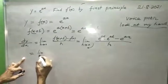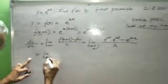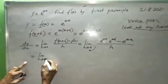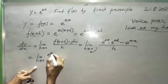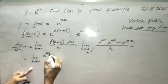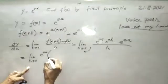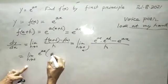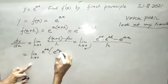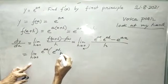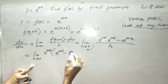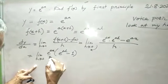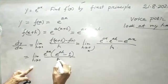Taking e to the power ax common, this becomes limit h tends to 0 of e to the power ax times e to the power ah minus 1, all by h.